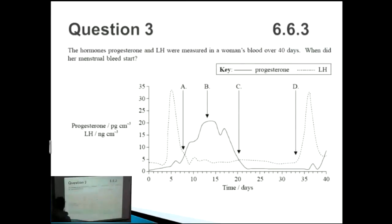Question number three. The hormones progesterone and luteinizing hormone were measured in a woman's blood over 40 days. When did her menstrual bleed start? This diagram, if you haven't practiced your menstrual cycle for a while, can really scare the bejesus out of you. But the key thing to know is that with luteinizing hormone, luteinizing hormone lets the ovum go. So every time that you have here you have ovulation. That's when the egg comes out.